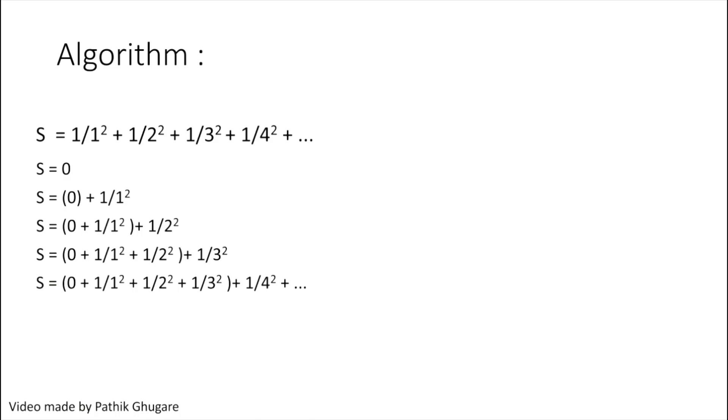So this is our algorithm. As we discussed earlier, we will initialize our series S with zero. This i will indicate that square term in the denominator which we are adding, and it will change with each iteration. Now you may ask, why n iterations? To get this series, we will have to add infinite terms, right? But that's not possible since our computer or machine is not made to do such infinite tasks.